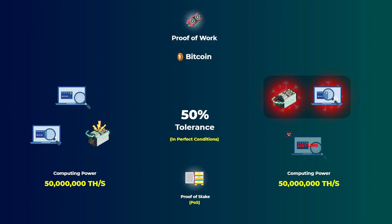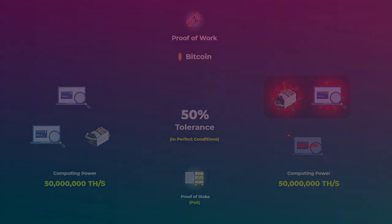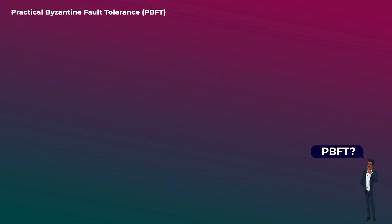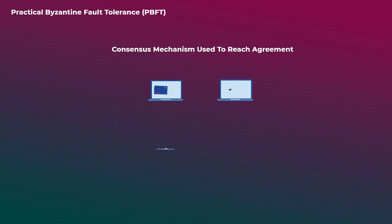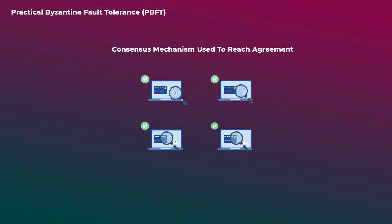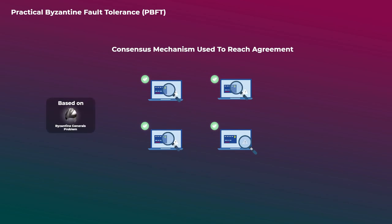But we won't get deeper into that as it can get very complicated. Now you know what Byzantine fault tolerance is. But a very similar term you will hear is practical Byzantine fault tolerance. Many people confuse it with the Byzantine fault tolerance we just explained, but they are actually two different things. Practical Byzantine fault tolerance is a consensus mechanism used to reach agreement between the computers on the network, just like other consensus mechanisms like proof of work and proof of stake. It was based on the research done on the Byzantine generals problem we explained earlier. That is why it was given that name.